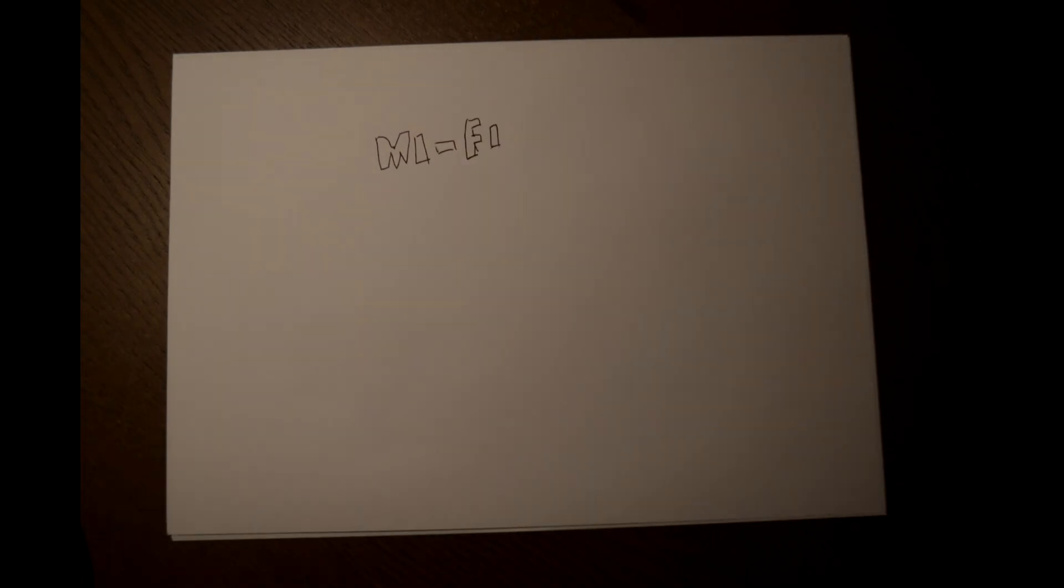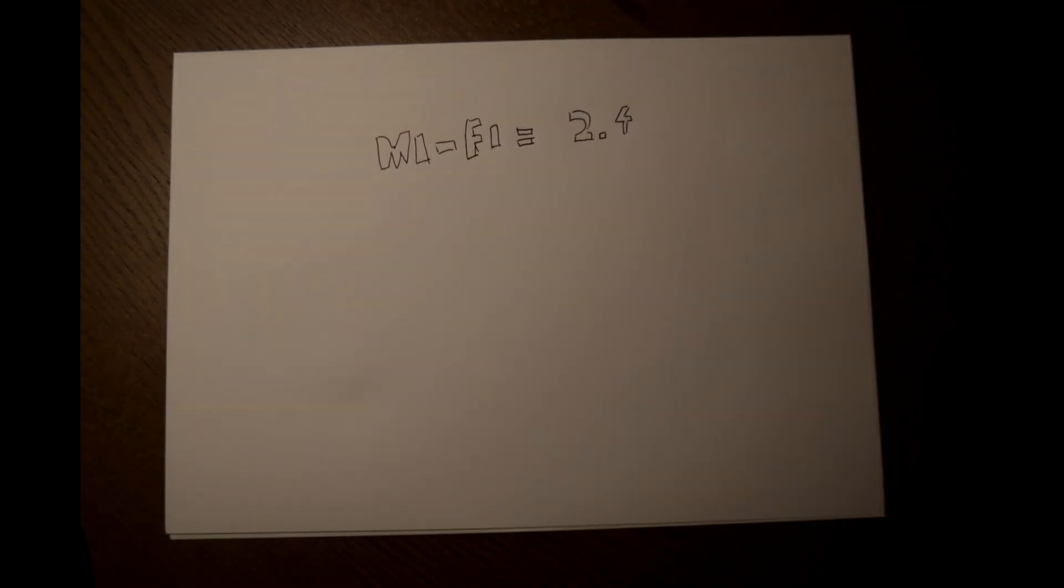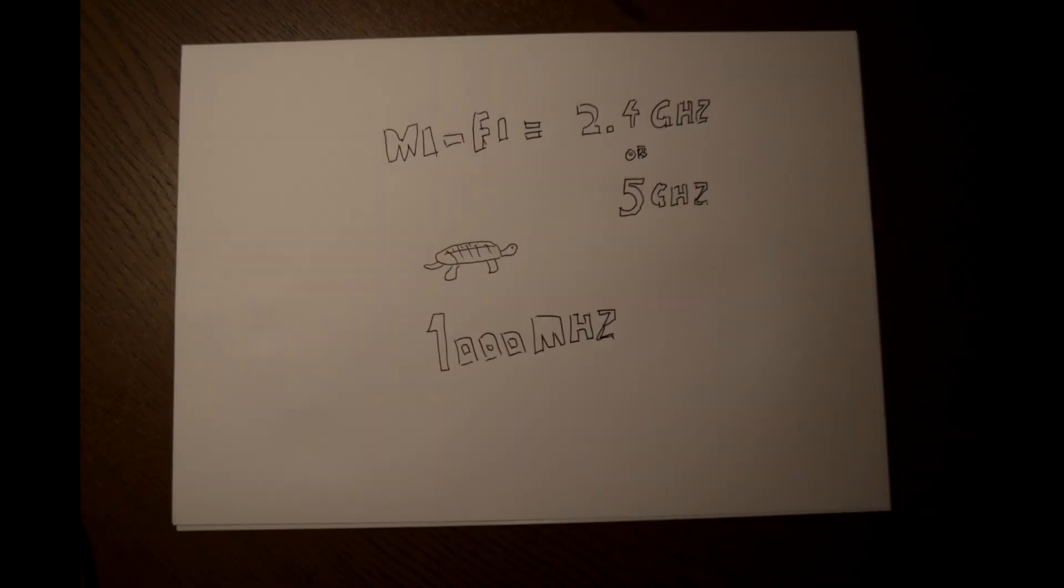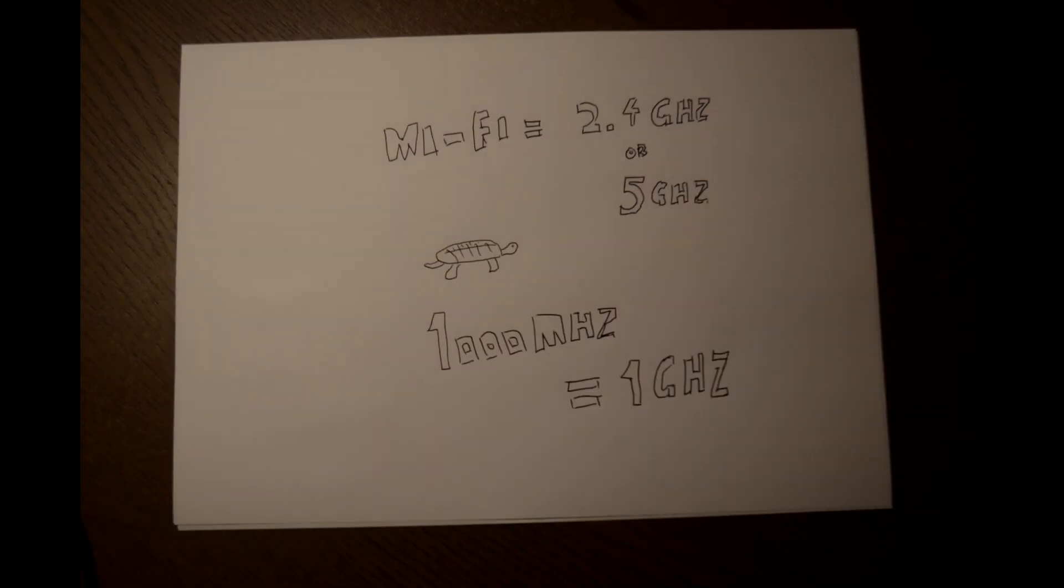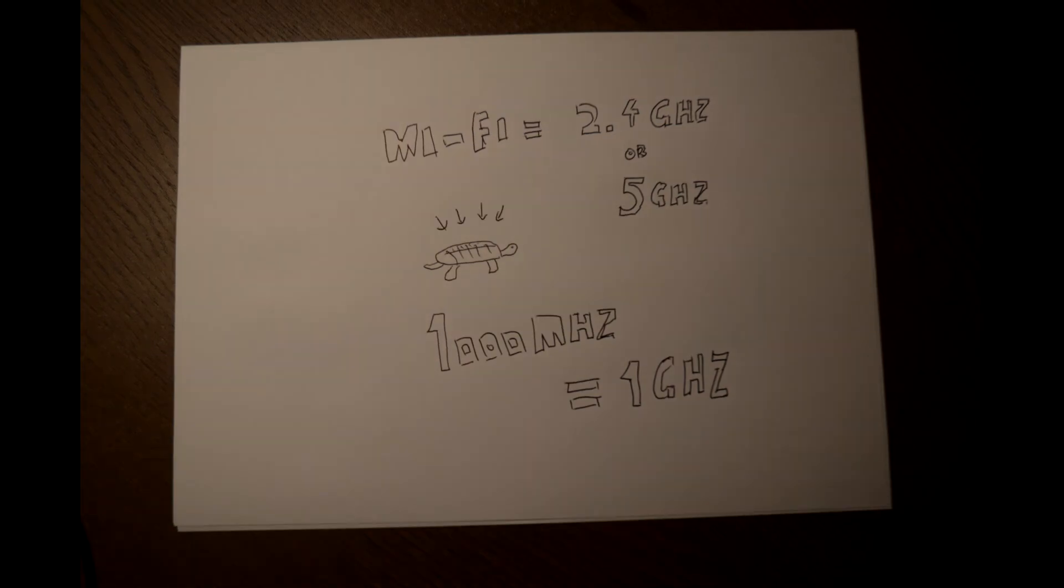Well, there are two frequencies for Wi-Fi: 2.4 gigahertz and 5 gigahertz. Essentially, one megahertz is one 1,000th of 1 gigahertz. You'll notice that the cellular signal repeats at a ginormously slower rate than the Wi-Fi signal. Kind of looks like this.